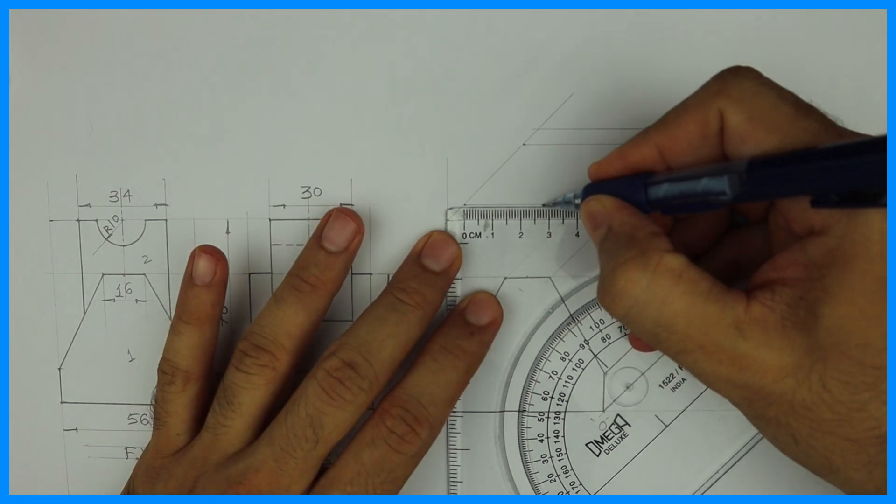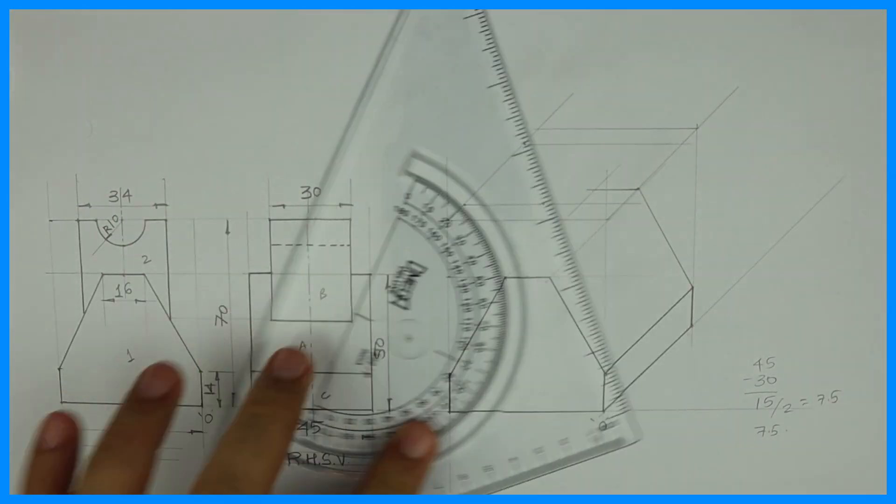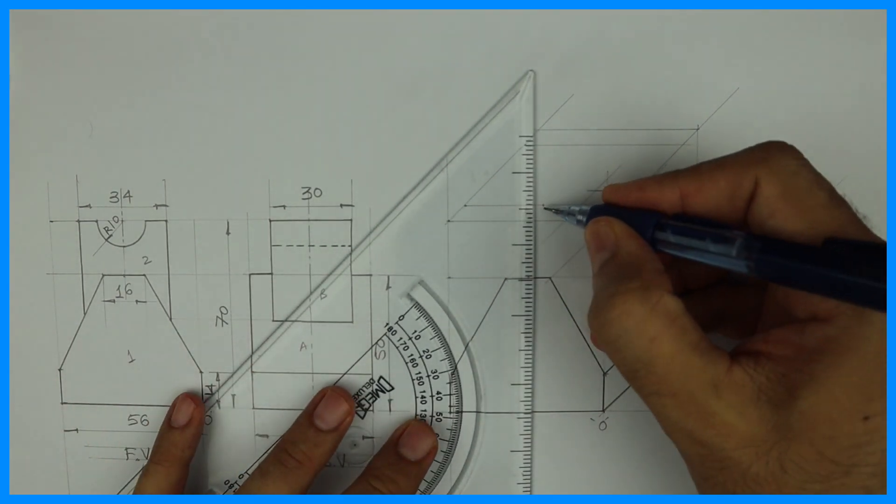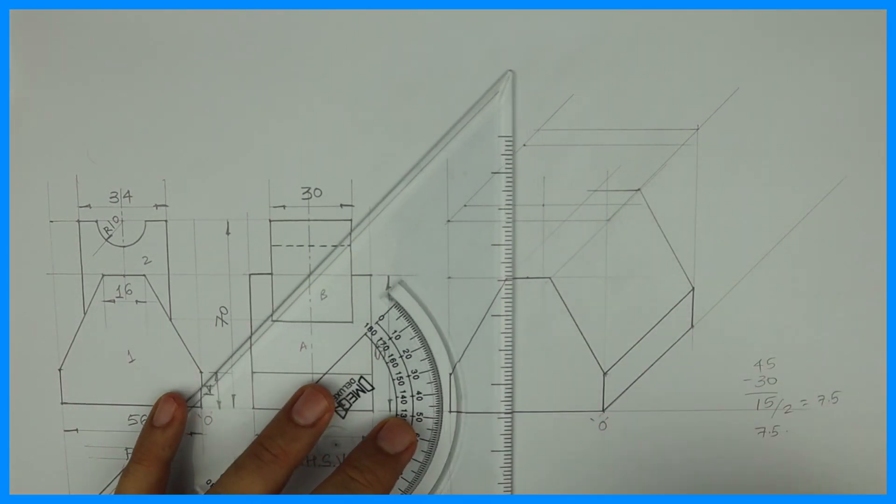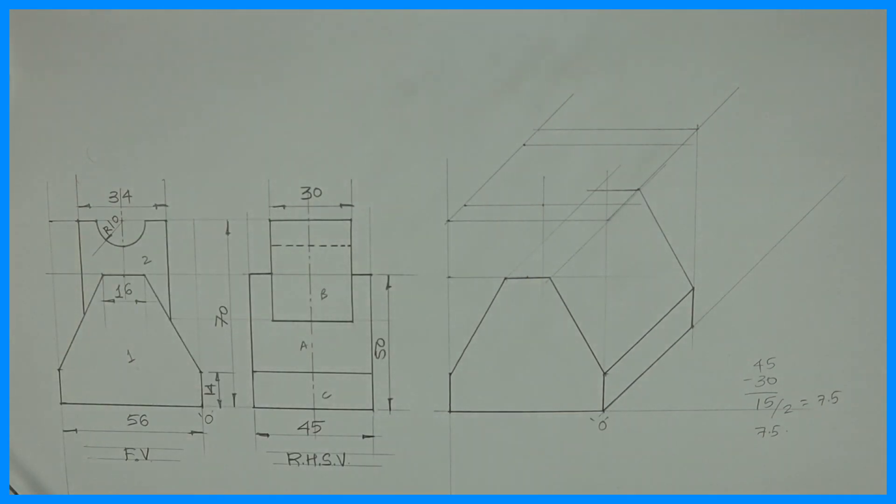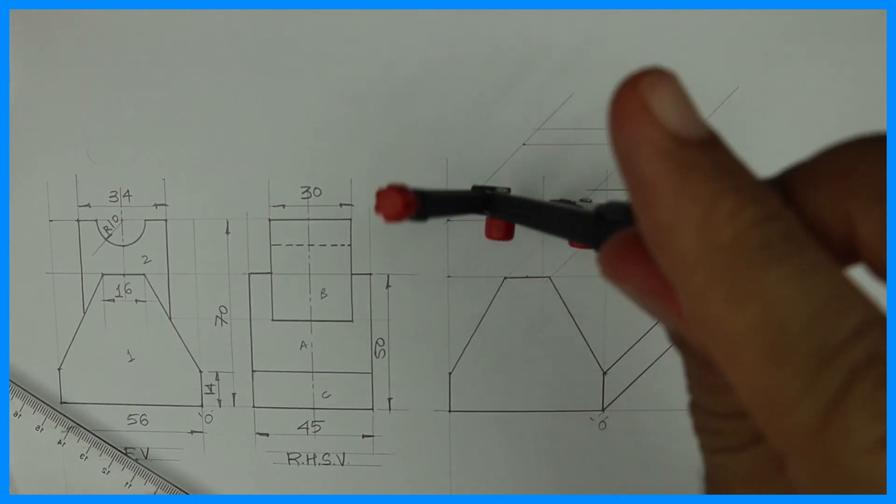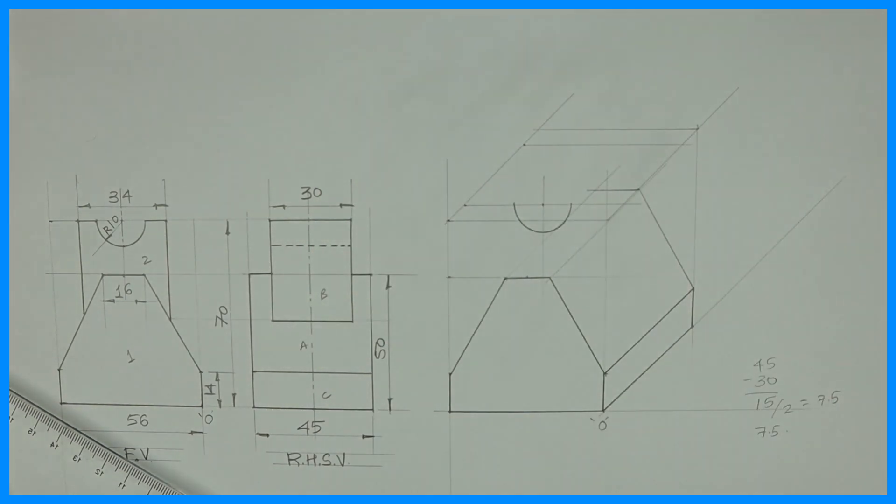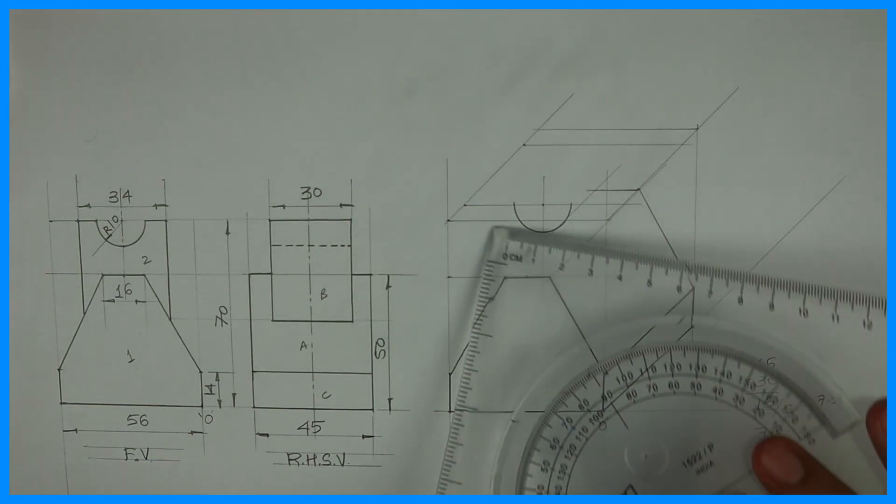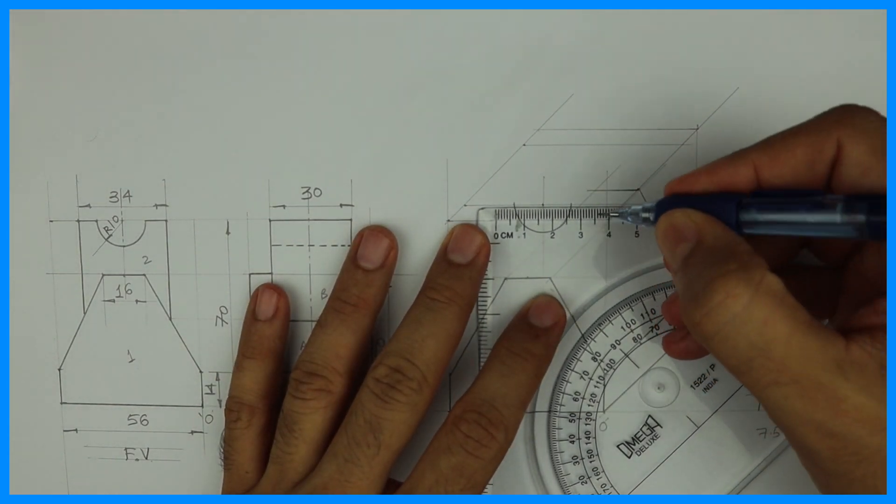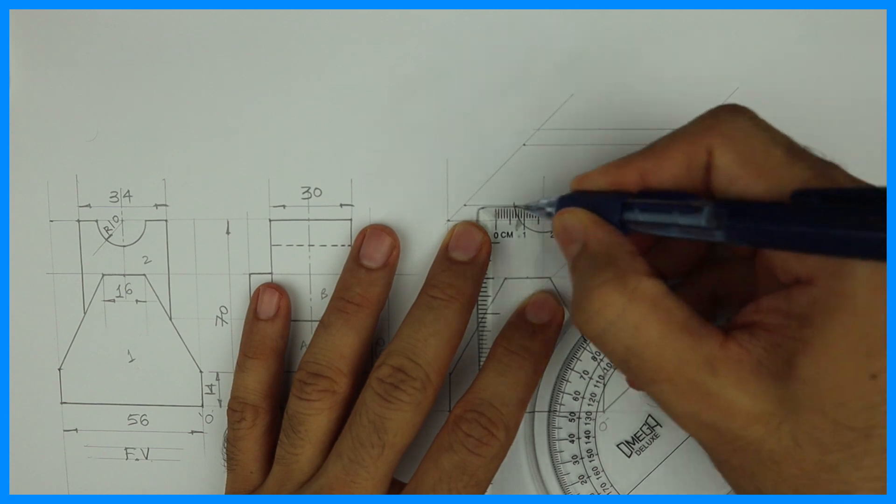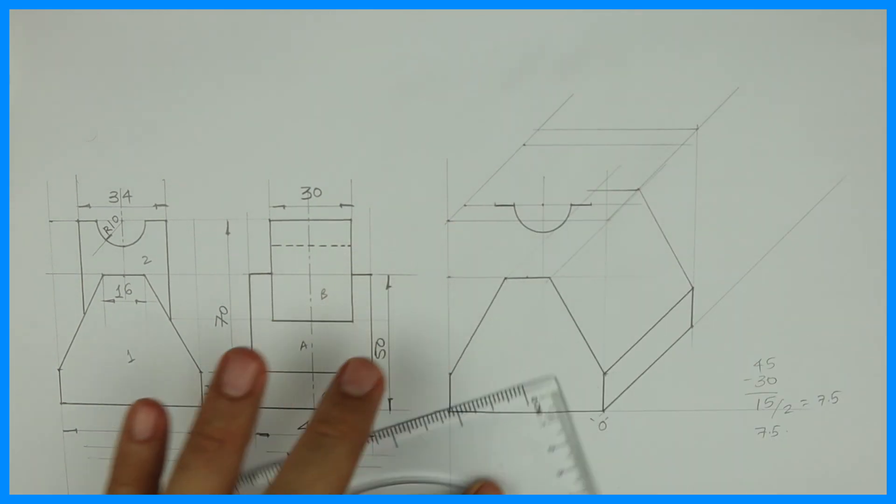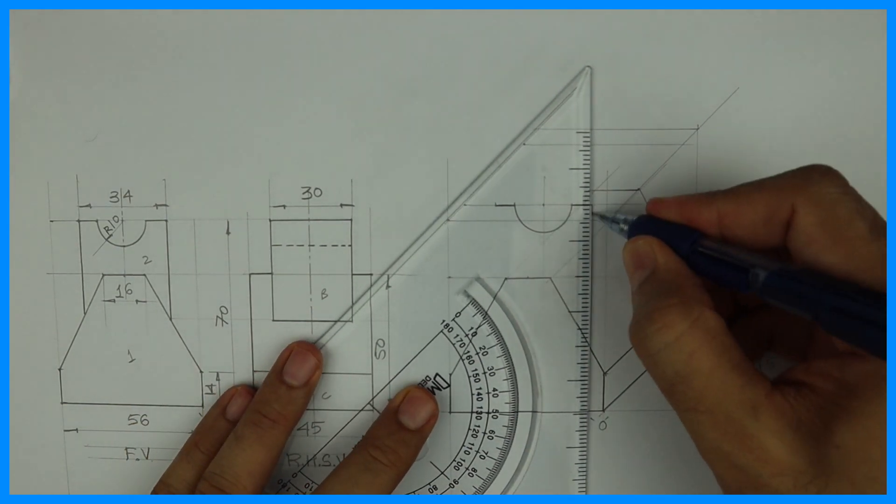So this is 56, you take half which is 28, and this is the center point. Then we need to take 17, 17 on both the sides. Then we'll go down.